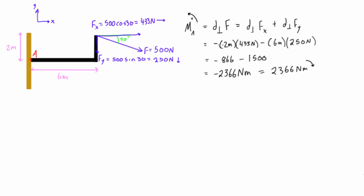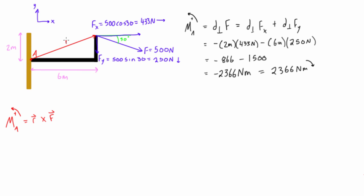Now let's use the vector cross product. The moment about point A equals r cross f, using the same positive sense as before. Here r is the position vector from point A to any point on the line of action of the force — we'll pick this known point. The x-component of r is 6 meters, the y-component is 2 meters, and the z-component is zero since this vector lies in the xy plane.